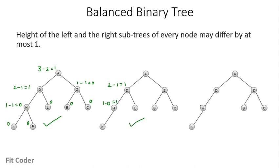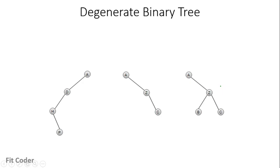For the third tree, the height difference for node H is one, but for node D it is 2 minus 0, so the height difference between the left and right subtree for node D is greater than one. Since node D doesn't satisfy this property, this tree is not a balanced binary tree.